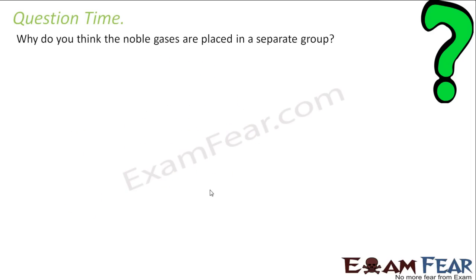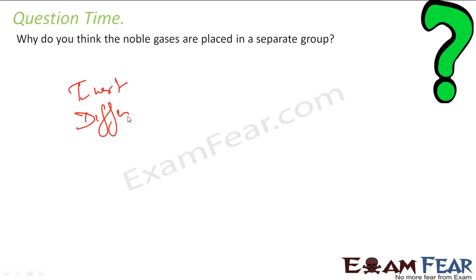Why do you think noble gases are placed in a separate group? Because they are inert — they do not react. And they are different from all other elements. So they are placed in a separate group. Very simple answer.